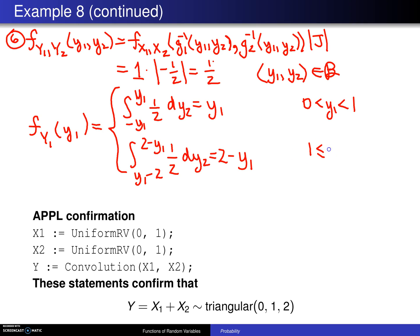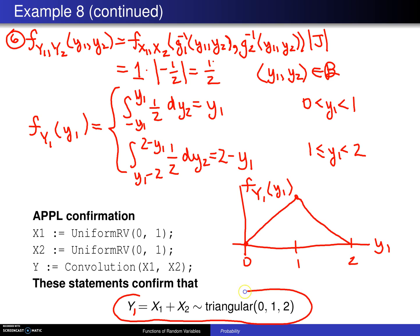If you were to take a look at this distribution and plot it, you would see that here is y1 and here is f sub y1 of y1. It runs from 0 to 2. And it looks like this. There's a 45-degree line right there going upwards. And here is a 45-degree line coming downwards. And that is the triangular distribution. So y1, which we are giving as x1 plus x2, turns out to be the triangular distribution.